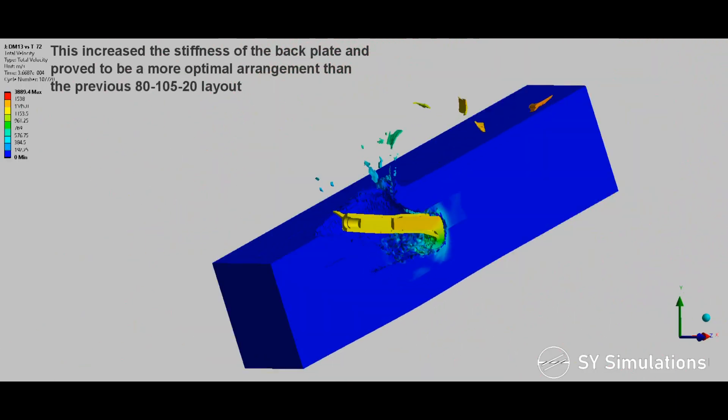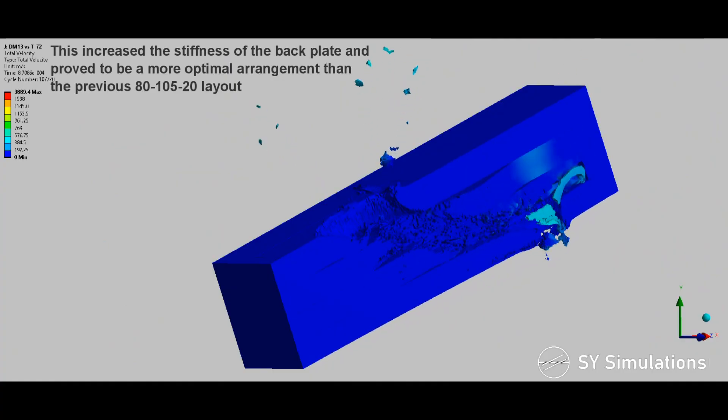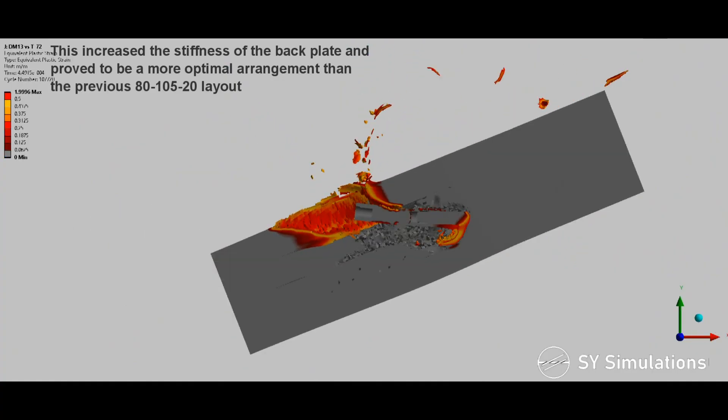This increased the stiffness of the back plate and proved to be a more optimal arrangement than the previous 80-105-20 layout.